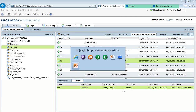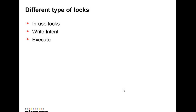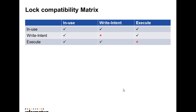Now I will show the lock compatibility matrix. The in-use lock can be acquired by more than one user. When the in-use lock is acquired, the write intent lock and execute lock can also be acquired. But when the write intent lock is already acquired, we cannot acquire more than one write intent lock on the same object, though we can acquire the in-use lock and execute lock. When the execute lock is acquired, the in-use and write intent locks can be acquired, but the same execute lock cannot be acquired by another user on the same object.